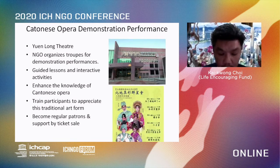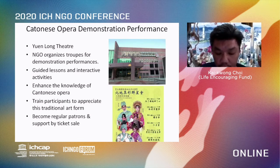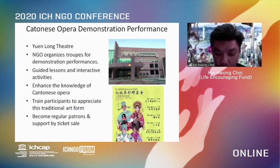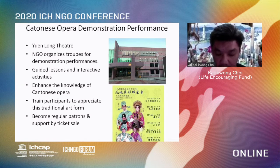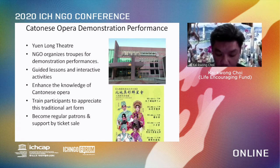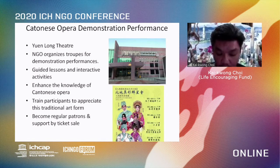The second domain is performing arts. The corresponding activity is a Cantonese opera demonstration performance. Cantonese opera was inscribed onto the UNESCO representative list of Intangible Cultural Heritage. The NGO organized troupes for a series of demonstration performances with guided lessons and interactive activities in Yuen Long theaters, for participants to enhance their knowledge of Cantonese opera and train them to appreciate this traditional art form.